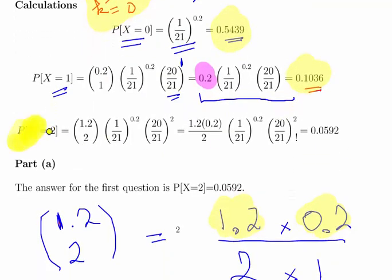And likewise for the probability of x equal to 2. From 1.2 choose 2 times 1 over 21 to the power of 0.2 times 20 divided by 21 to the power of 2. That's our binomial coefficient there, 1.2 times 0.2 over 2. 1 over 21 to the power of 0.2 and 20 over 21 to the power of 2. That bit of calculator work is 0.0592.